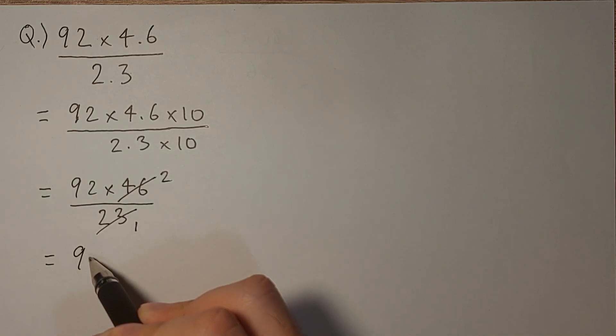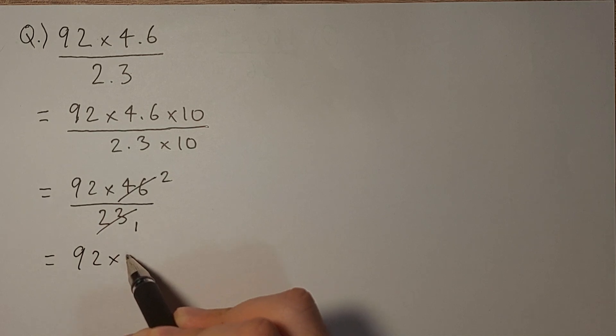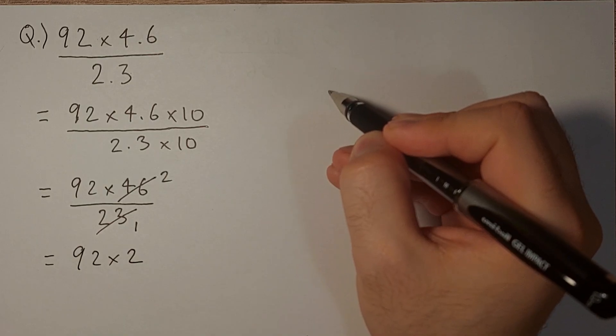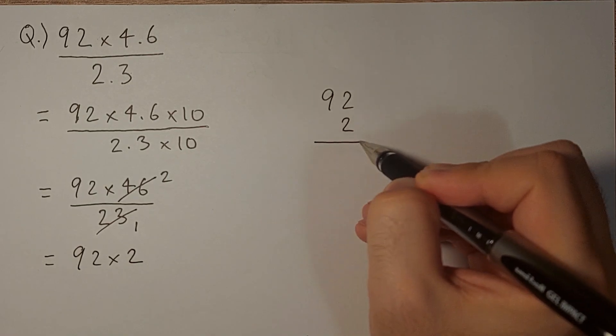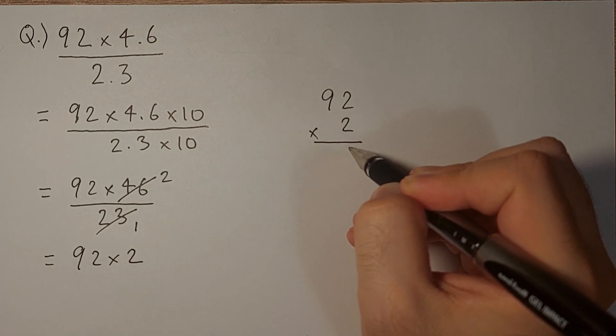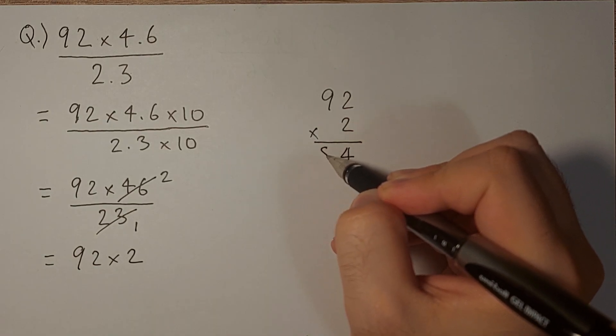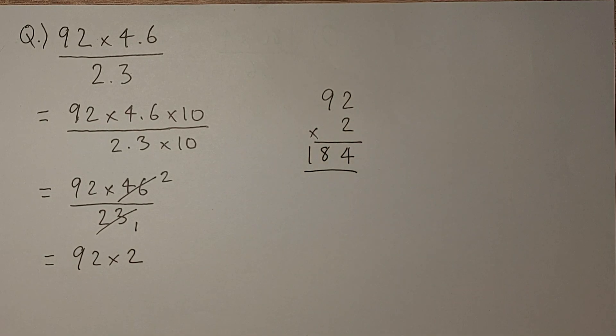This gives us 92 times 2, and if we multiply 92 times 2, we get 184. So the answer is 184.